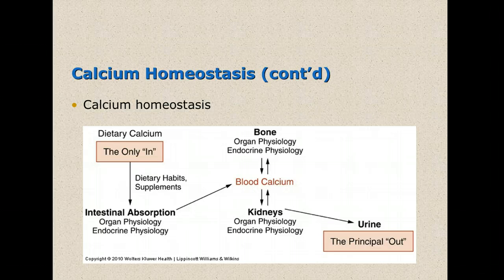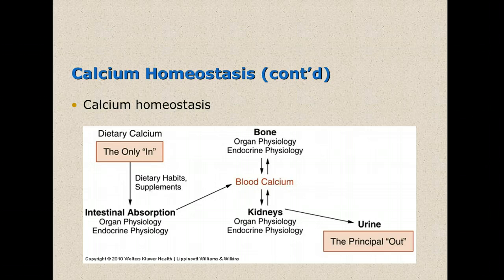A lot of people think that once bones are made, their calcium stays there. But your body is actually capable of pulling calcium out of the bone and back into the bloodstream when it's needed for things like heart contraction and muscle contraction. So it can actually go back and forth — it is in constant flux. Excess calcium can also be eliminated through the kidneys and the urine.